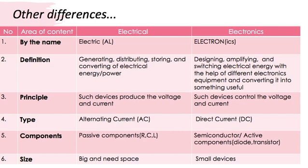Let's come to the type of current. By type, I mean which type of current passes through electrical and electronic devices. Electrical devices use alternating current, or high current. Whereas electronic devices use direct current. Direct current is not as high when compared to alternating current, but of course it is still pretty high — so I would recommend not to play around with the current.